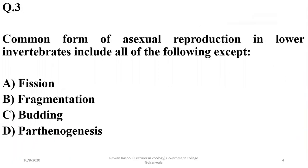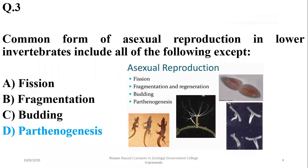Common forms of asexual reproduction in lower invertebrates include all of the following except — parthenogenesis is not found in lower invertebrates. It is a characteristic of actually higher invertebrates which developed later on, as compared to fission, fragmentation, or budding.